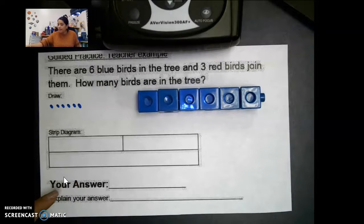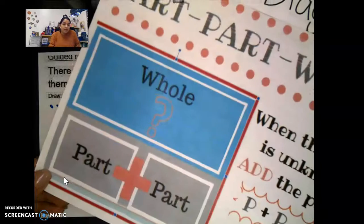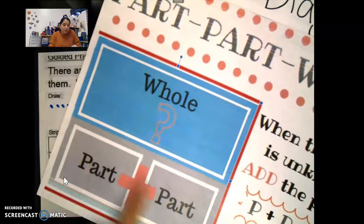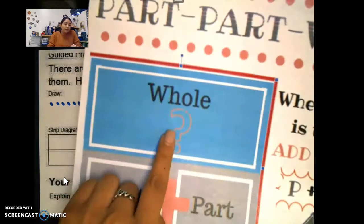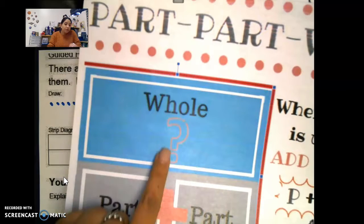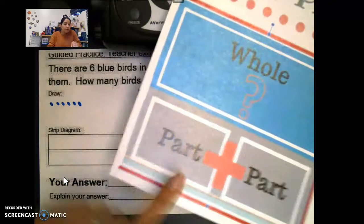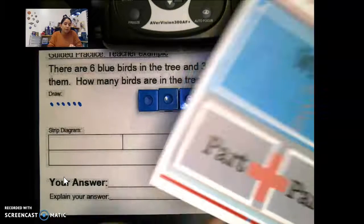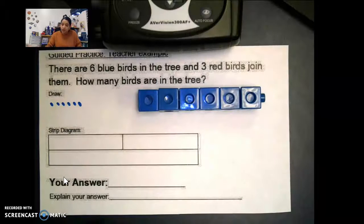Our whole — we want to know how many birds are in the tree, and that is our whole. We're trying to solve that. We don't know how many birds are in the tree, but we do know we have six blue birds and three red birds, so we know each part.